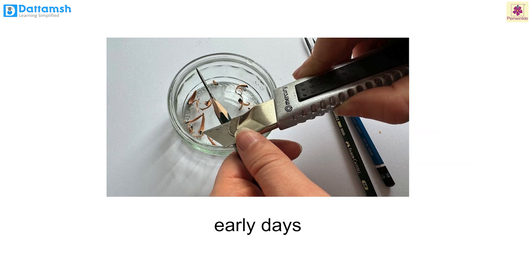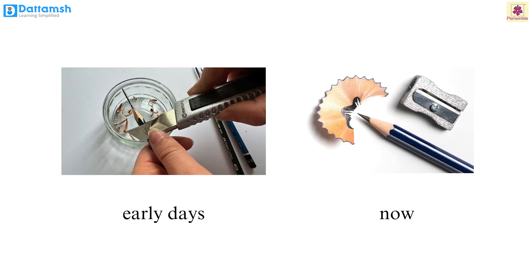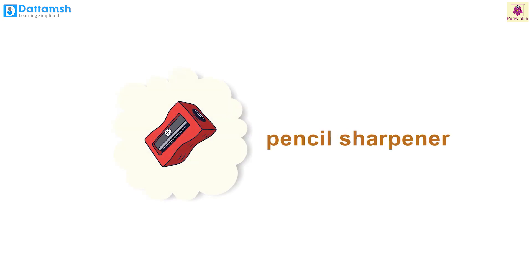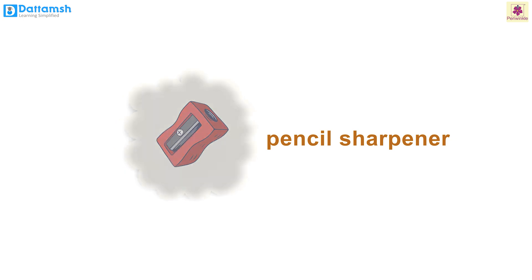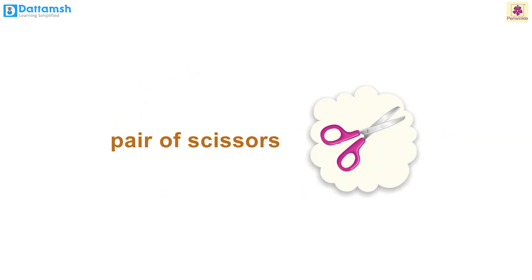In the early days we used a sharp blade to sharpen pencils. Now we have a sharpener — it's so quick! Again, that's a machine helping us. And what about scissors that help us cut papers?